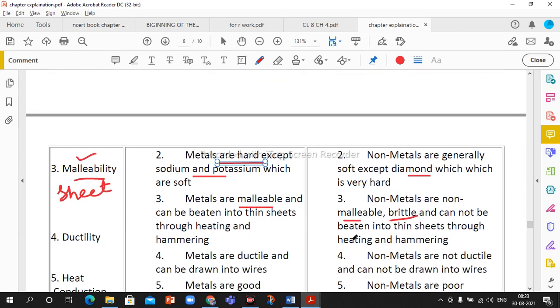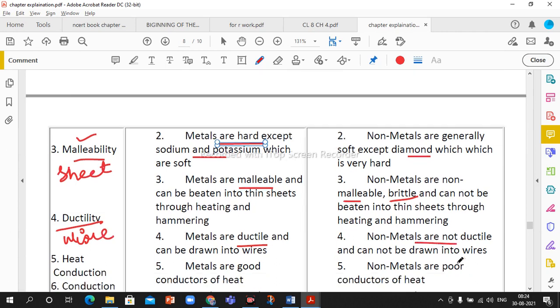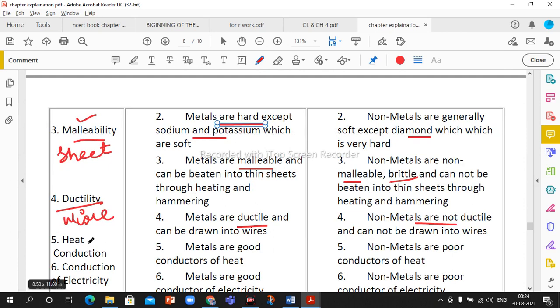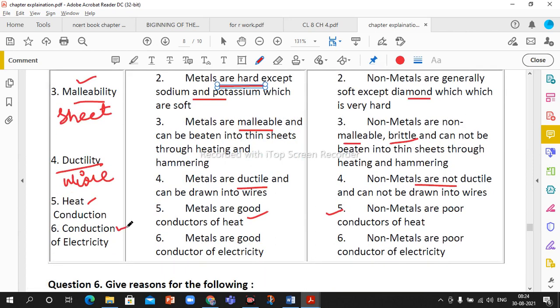Ductility means metal can be drawn into wire. Metals are ductile whereas non-metals are non-ductile, we cannot draw wire from non-metals. Heat: generally metals are good conductors of heat, non-metals are poor conductors of heat. Conduction of electricity: metals are good conductors of electricity whereas non-metals are poor conductors of electricity. But here one exception to remember: graphite is a good conductor of electricity.